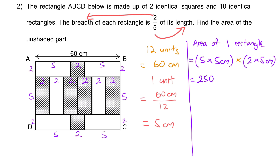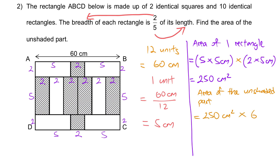That gives 25 cm times 10 cm, which equals 250 cm squared for one rectangle. Finally, we find the area of the unshaded part — counting 6 unshaded rectangles. Area of the unshaded part equals 250 cm squared times 6, which gives 1500 cm squared.